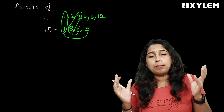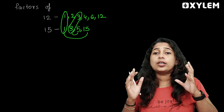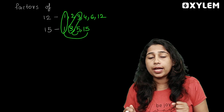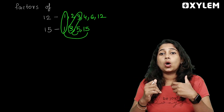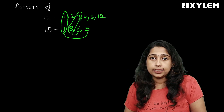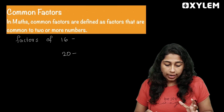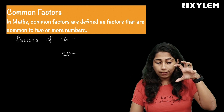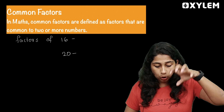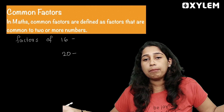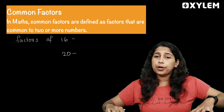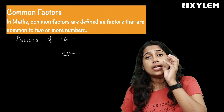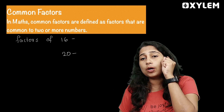Two factors are common. They are called common factors. In math, common factors are defined as factors that are common to 2 or more numbers. These factors are common at the same time.